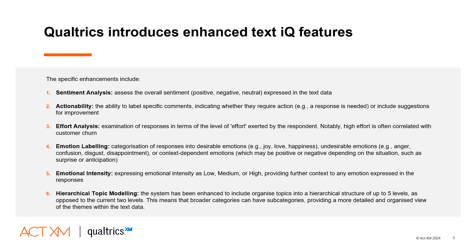Qualtrics has recently introduced six new features to the existing TextIQ functionality. These include sentiment analysis, actionability, effort analysis, emotion labeling, emotional intensity, and hierarchical topic modeling.